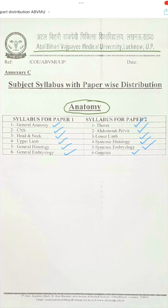There might be a separate question on genetics, or it might only appear as an MCQ. Genetics here is not cytogenetics — remember, cytogenetics is well taught and asked in biochemistry. Here in anatomy you just need to know about chromosomal anomalies, aberrations, hereditary diseases, hereditary patterns, and possibly cell division or cell cycle related questions.